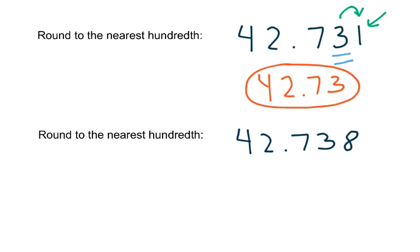Let's look at another example. Round to the nearest hundredth: 42.738. This one's a little different than the last one. We're still rounding to the nearest hundredth, so this is going to be the last digit in our answer — it's either going to be 42.73 or 42.74. We look one space to the right of where we need to round. If that number is five or higher, we round up; if that number is four or lower, we round down. In this case, we have an eight, which is bigger than five, so we're going to round up, and our answer is going to be 42.74.